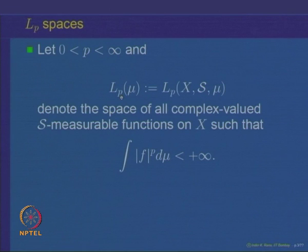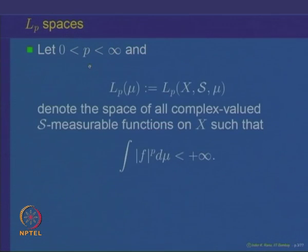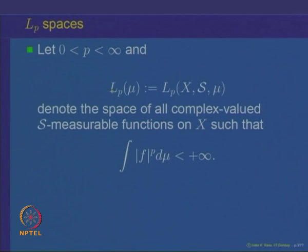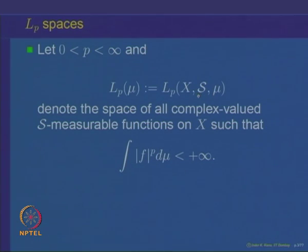We will fix a real number P between 0 and infinity. P is a real number between 0 and infinity, and we will look at the space called L^P(μ), which is also written as L^P(X, S, μ) depending on whether we want to emphasize the underlying measure space or not. If it is clear from the context what the underlying set X and the sigma-algebra S are, we will just write this space as L^P(μ).